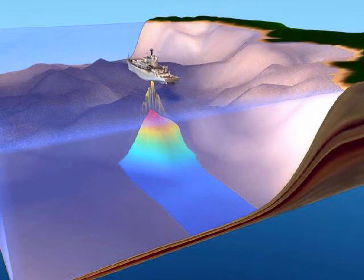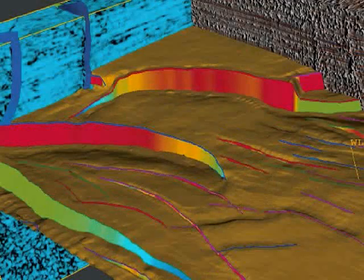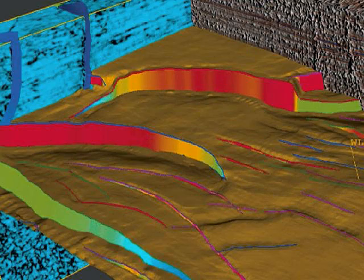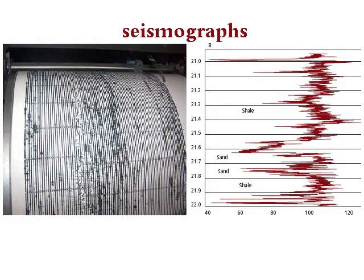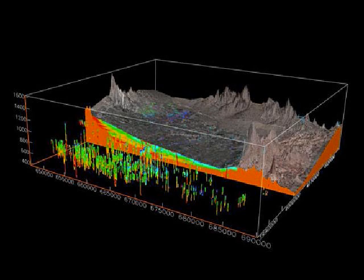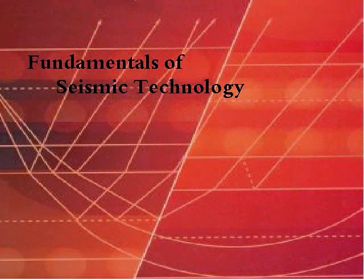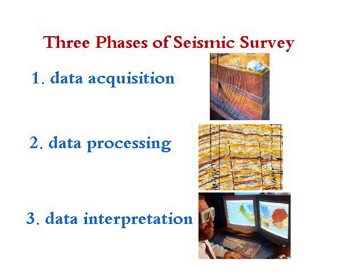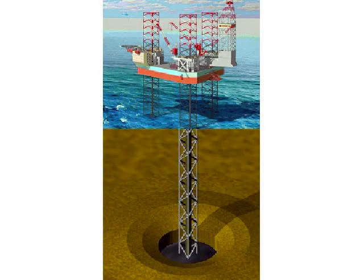As illustrated, seismic technology allows us to see into the subsurface by using sound wave properties to illustrate formation characteristics such as rock type, depth, and shape, to map subsurface structures. Now that we know the fundamental properties of seismic technology, let's discuss the three phases involved in the science of sound waves that help us decide where to drill the first well.